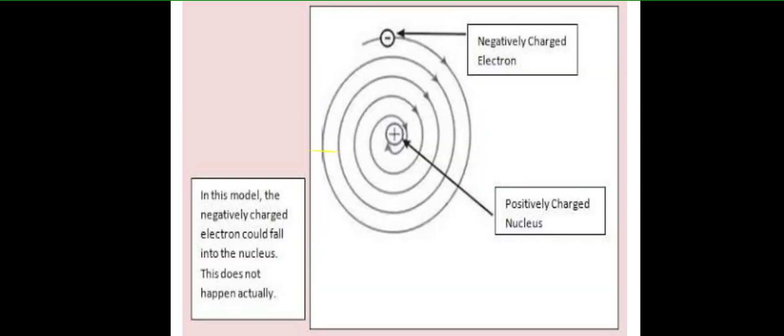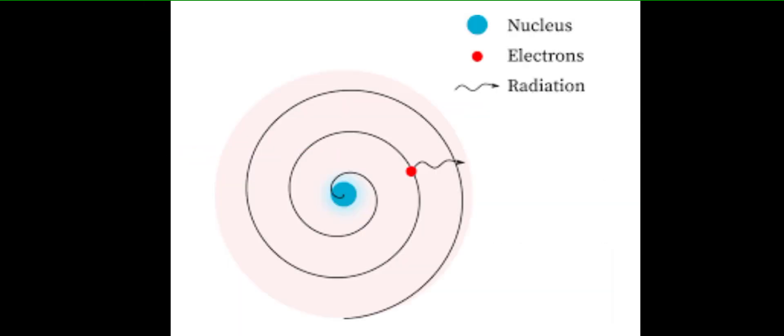So this phenomenon shows that electrons would keep losing energy and finally fall onto the positively charged nucleus. That was all for today. Thank you so much.